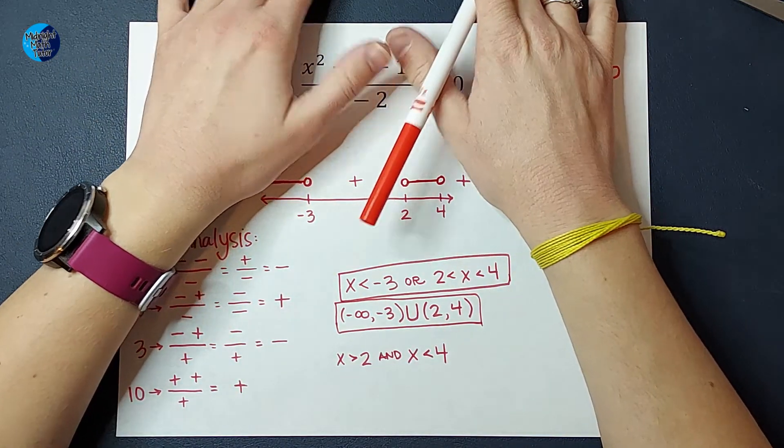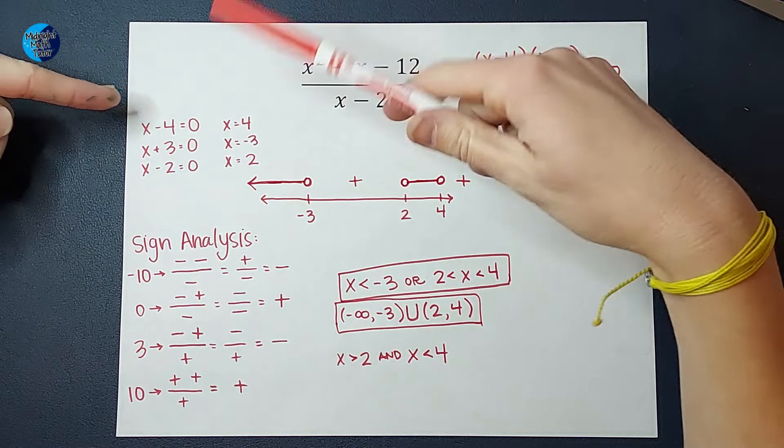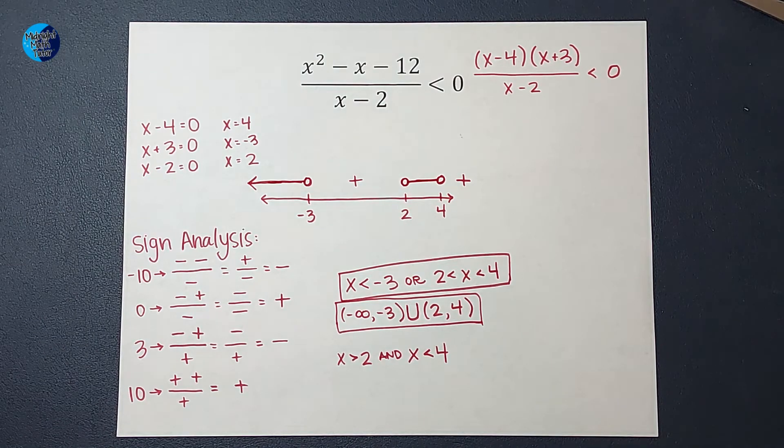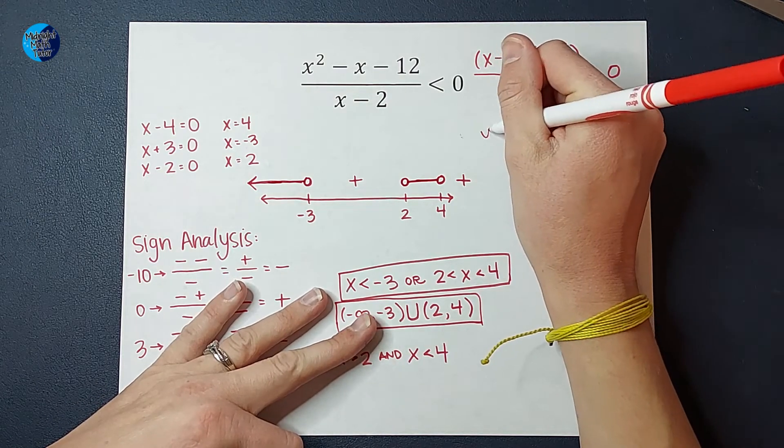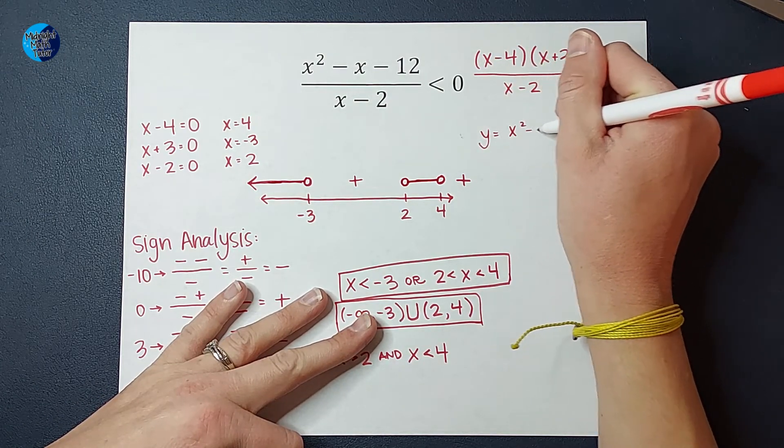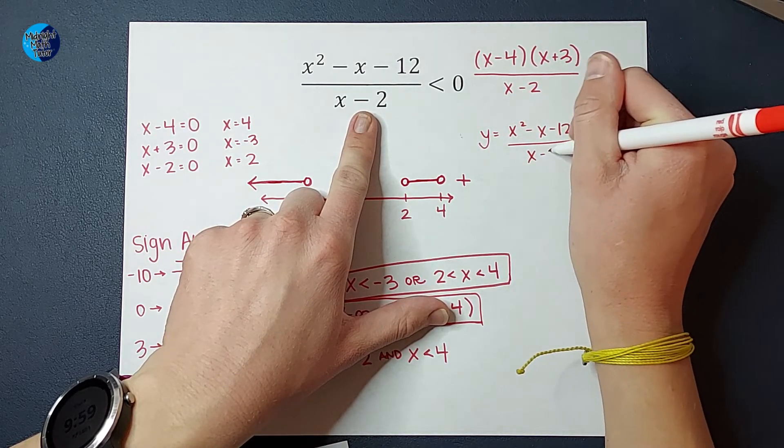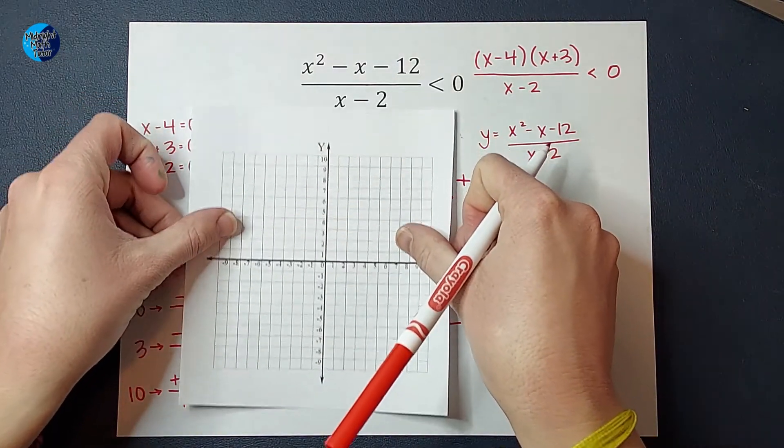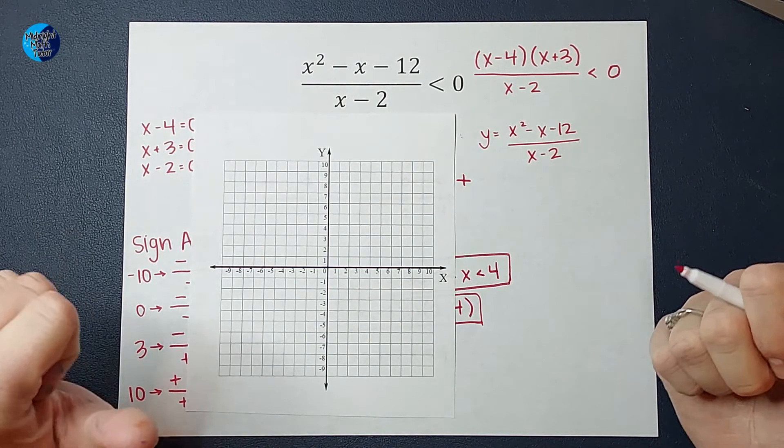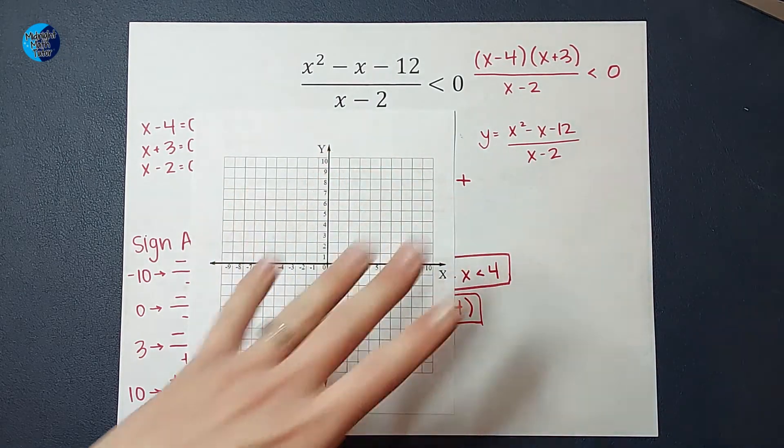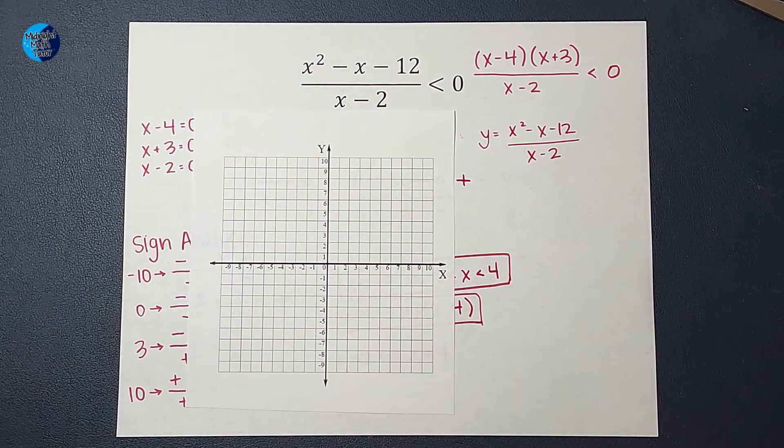Now is my favorite part, guys. I get to show you why we did this. Why did we set these equal to 0? Why did we do this sign analysis stuff? I'm going to show you. Pretend for a second, don't run and hide when I say the word graph, pretend that you were being asked to graph this problem: (x² - x - 12)/(x - 2). I'm not going to go into a ton of detail about how to graph this because I do have a video where I graph this exact problem.